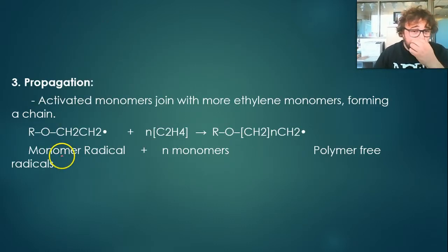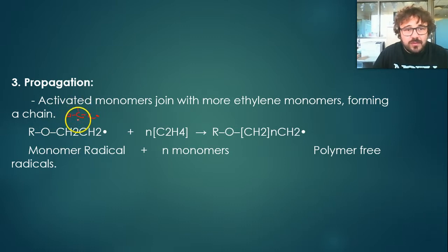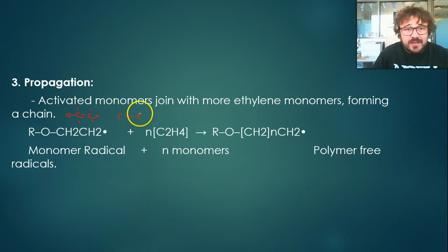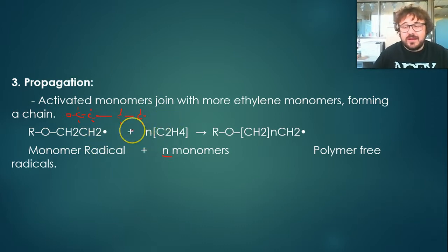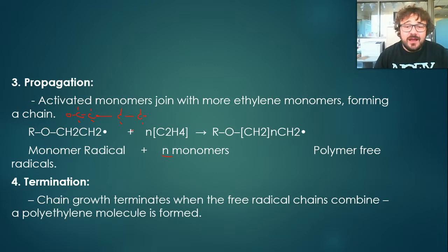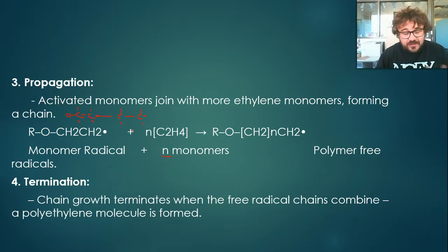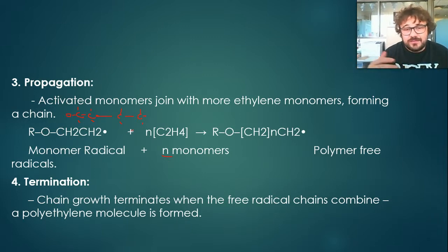So that's activation. Then you have propagation — you've still got your free radical there, and along comes another ethylene monomer. That free radical breaks the double bond, a new bond forms, and you've got a free radical on the end again. This happens over and over — one by one it gets bigger and longer. Then we terminate it. We terminate it when the free radical chains combine. You can do this in several ways: dump in a bunch of free radicals, or cool it down — if you cool it down a lot, they'll stop reacting, they'll all join together and lose their collision speed.